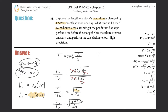So basically, this tells us that the new period relative to the old period will be equal to the square root of 0.99. Now let's calculate this. We take the square root of 0.99 and we get a value of approximately 0.9950.